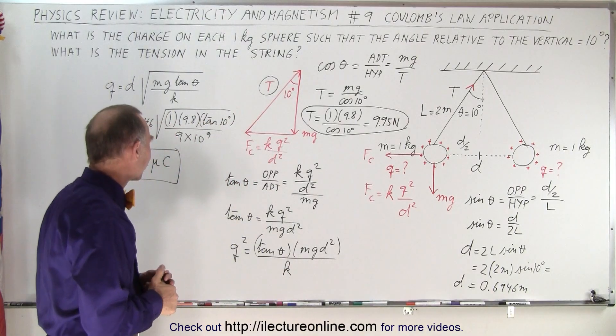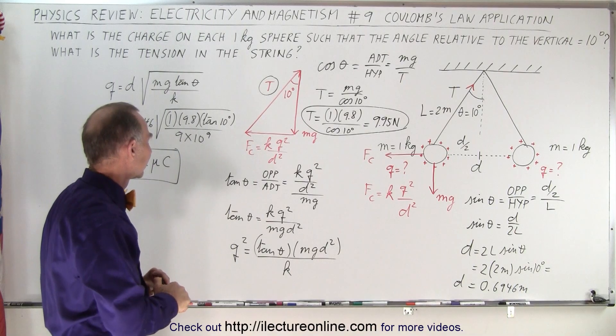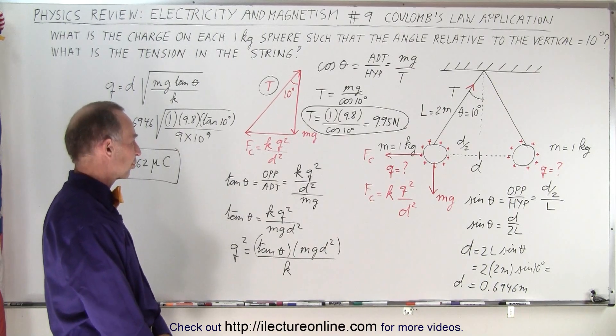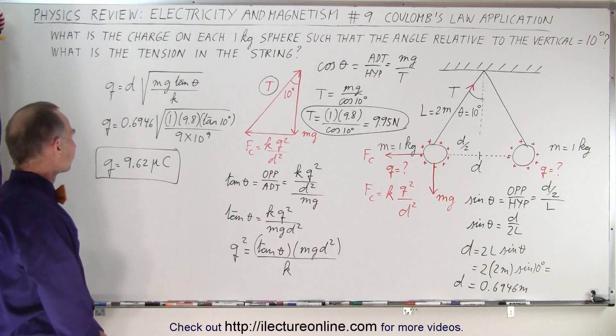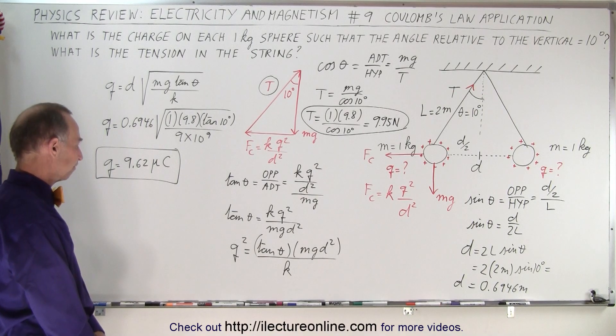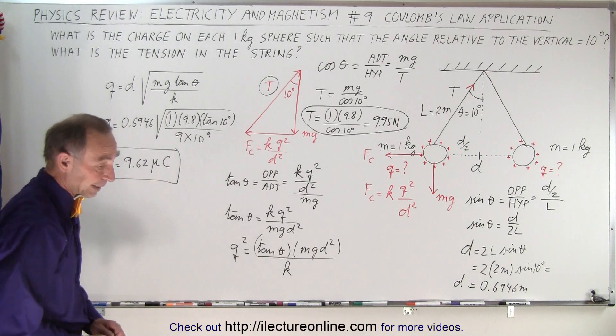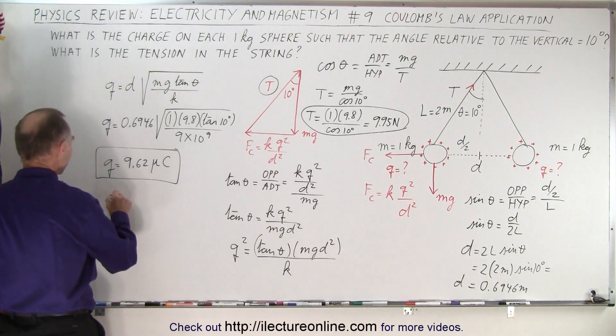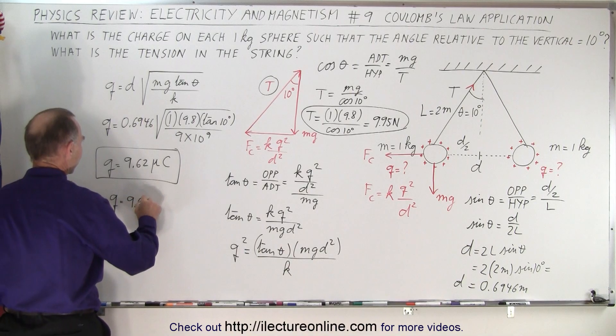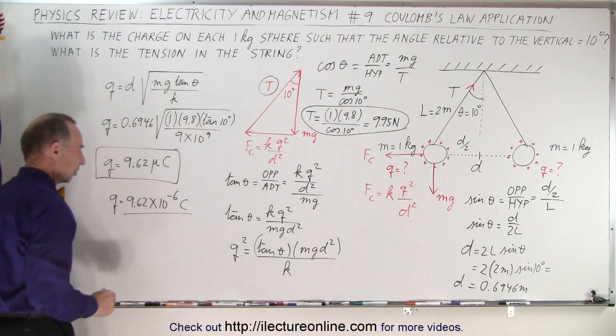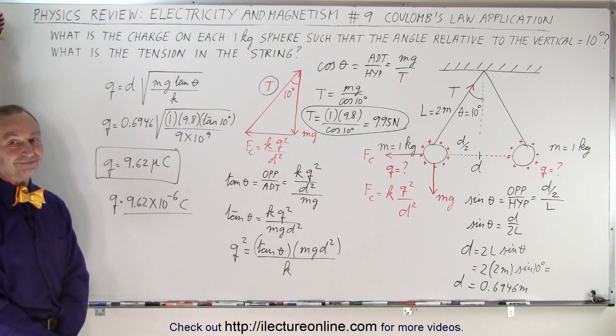But then how do people know it's microcoulombs at the end? Ah, that's a good question. How do we know it's microcoulombs? Because I end up with, so what my calculator said, my calculator said Q was equal to 9.62 times 10 to the minus 6 coulombs, right? That's what I got on my calculator, and I just converted it to microcoulombs. Yeah, but how do you know it's coulombs in the first place?